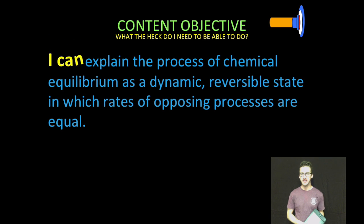We are going to explain the process of chemical equilibrium as a dynamic, reversible state in which rates of opposing processes are equal.